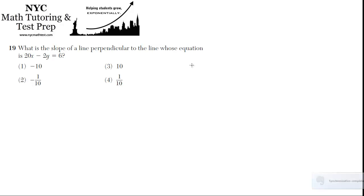What is the slope of a line perpendicular to the line whose equation is 20x minus 2y equals 6? So, we want to know the slope of a line that's perpendicular. We want to find the slope of this line, and then take the negative reciprocal of that.